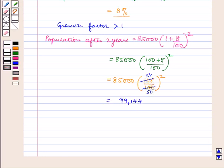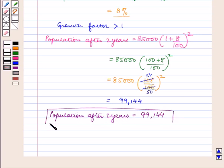So the population after 2 years equals 99,144, which is our answer.